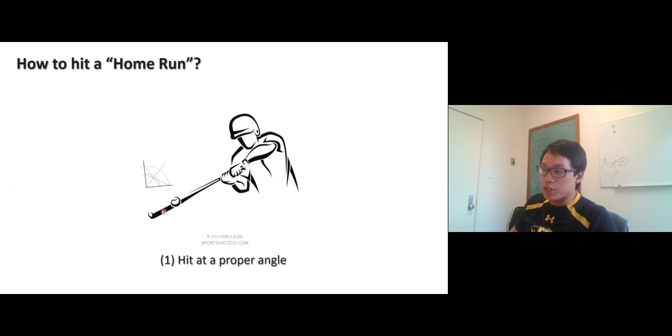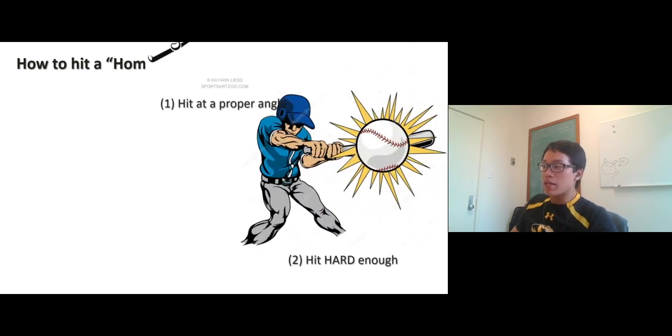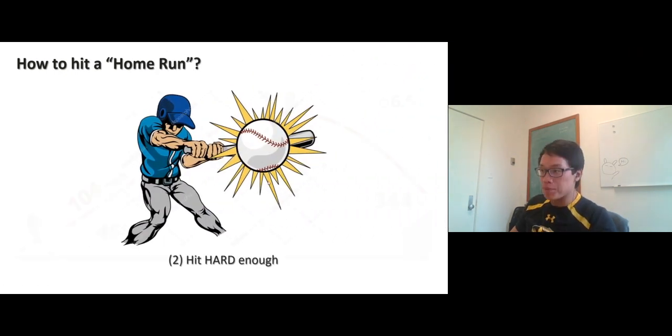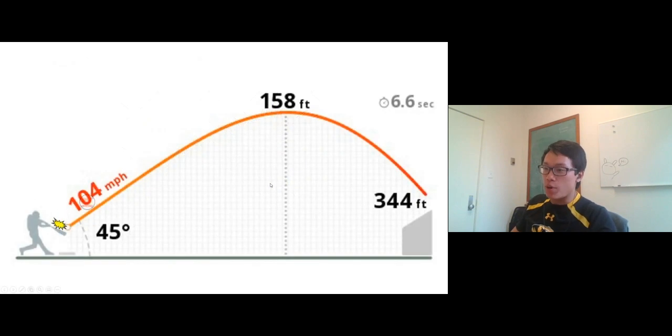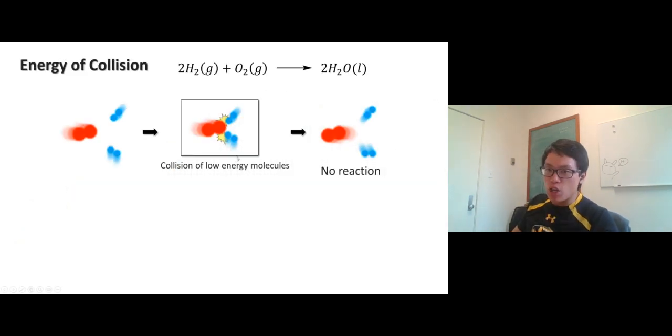You have to hit at the right angle to send the ball in the right direction. And hit hard enough. That's very important. If you don't hit hard enough, the ball just drops. Hit with the proper orientation and the right power so the ball will go to get a home run. That's the energy of collision we want to talk about.